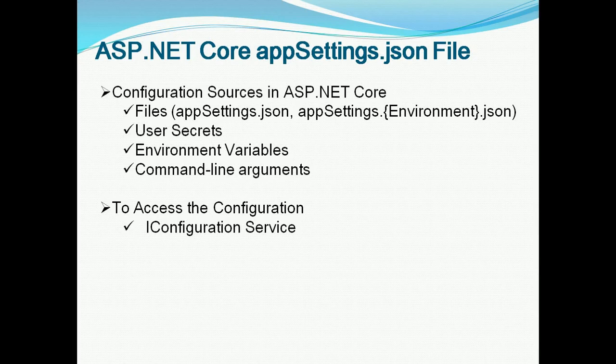In ASP.NET Core, there are multiple configuration sources. First, appsettings.json. Next, user secrets. Third, environment variables. Fourth, command line arguments. The configuration is read in this order, and the latest configuration overrides the previous one.